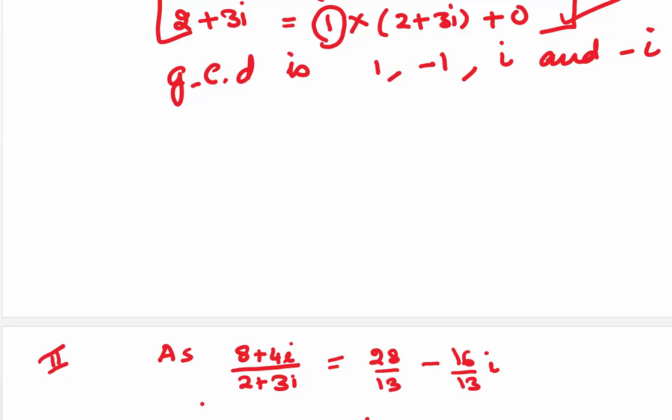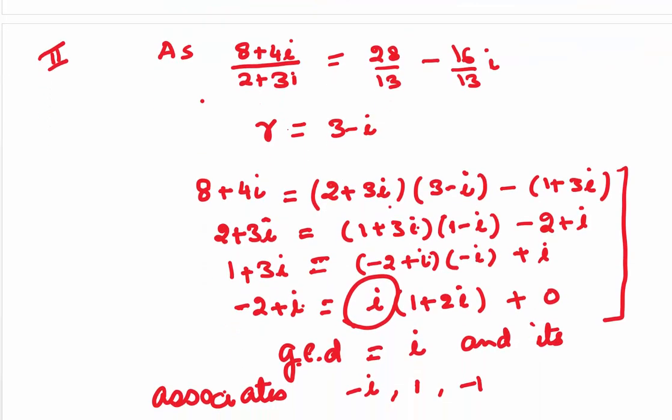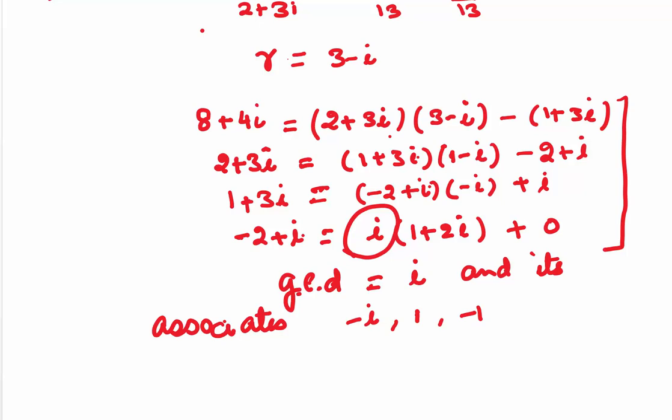1, minus 1, i and minus 1. Now, another thing, here, you saw that in this division, I have taken 1 plus 3i. What I have done is, in the first step, we divide 8 plus 4i by 2 plus 3i and our gamma is 3 minus i and delta is minus 1 plus 3i. In the next step, we divide 2 plus 3i by 1 plus 3i. You can always divide it by minus of 1 plus 3i also, which I will show you later.